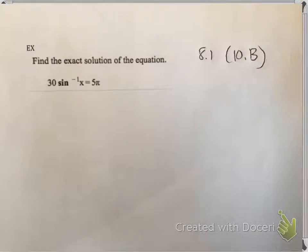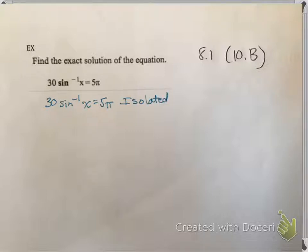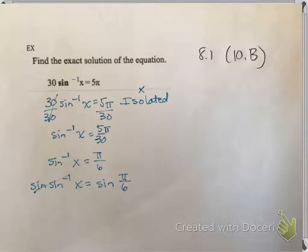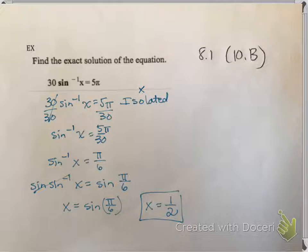Find the exact solution of: 30 times inverse sine of x equals 5 pi. Divide both sides by 30, giving inverse sine of x equals 5pi over 30, which reduces to pi over 6. To get rid of inverse sine, apply sine to both sides — they cancel — leaving x equals sine of pi over 6. Pi over 6 is 30 degrees, and sine of 30 degrees equals 1/2. So the answer is x = 1/2.